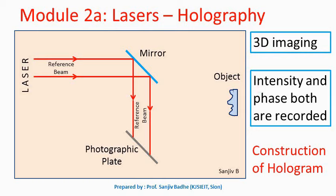In holography, both the intensity and phase of the light waves reflected from the object are recorded, making it a complete recording. This technique was discovered by Denis Gabor, and he was awarded the Nobel Prize for this invention in 1971.